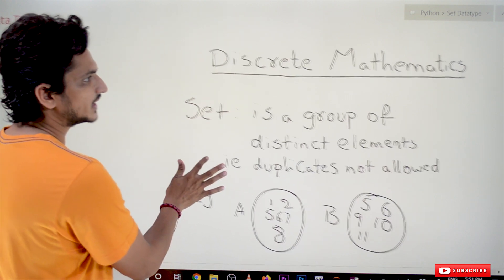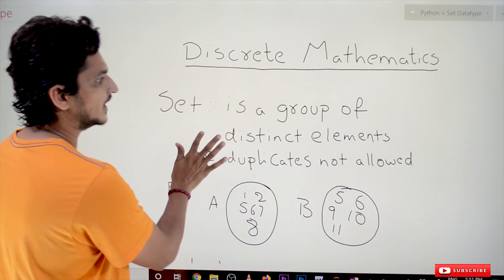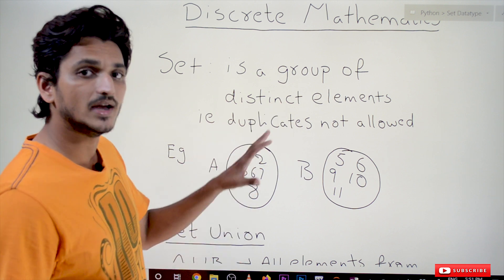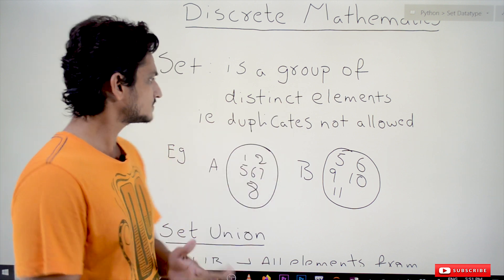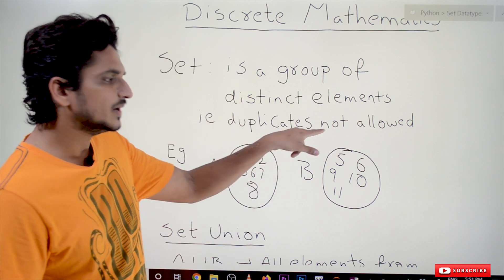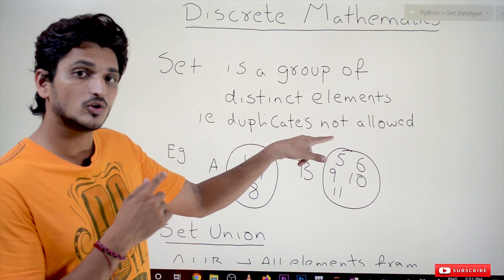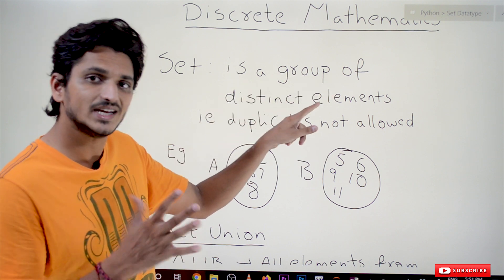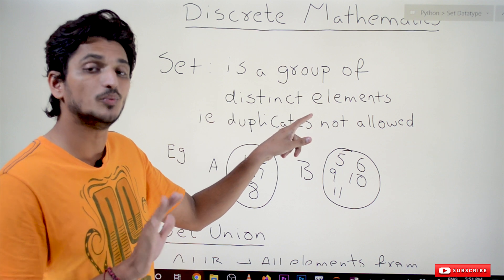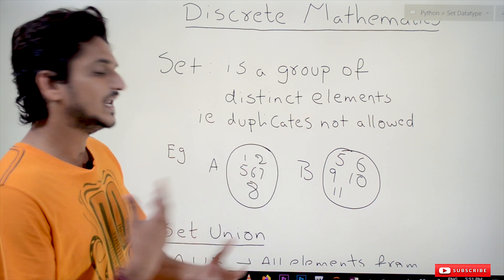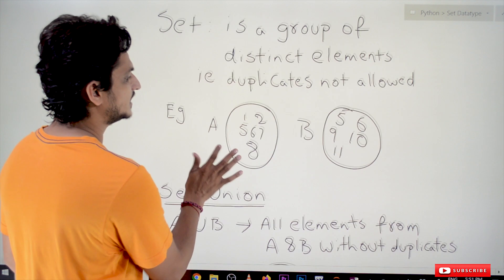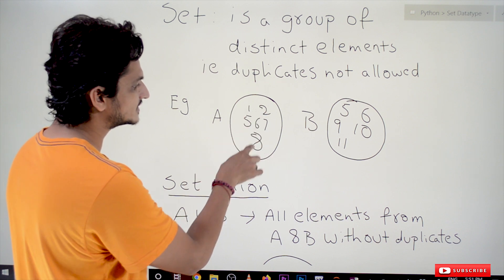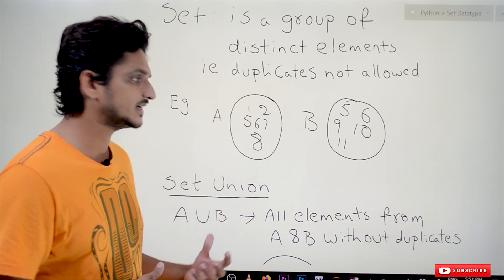In discrete mathematics, a set is a group of distinct elements. Duplicates are not allowed in the set. For example, set a consists of the elements 1, 2, 5, 6, 7, 8.